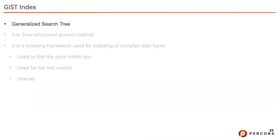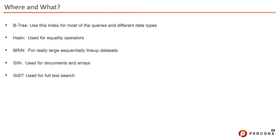Another index is GiST — Generalized Search Tree. It's actually an indexing framework, a tree-structured access method for complex data types. Use cases include finding a point within a box, full-text search, and integer array containment. Summary: Btree is used for most queries and data types. Hash is for equality operators only. BRIN is for sequential data physically correlated with disk. GIN is for documents and composite values. GiST is for full-text search and complex spatial types.